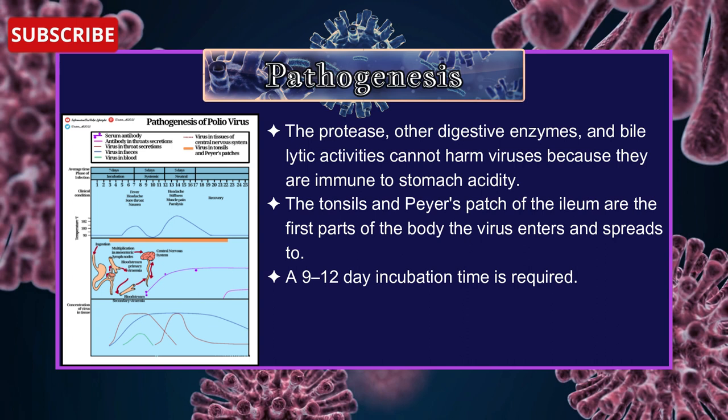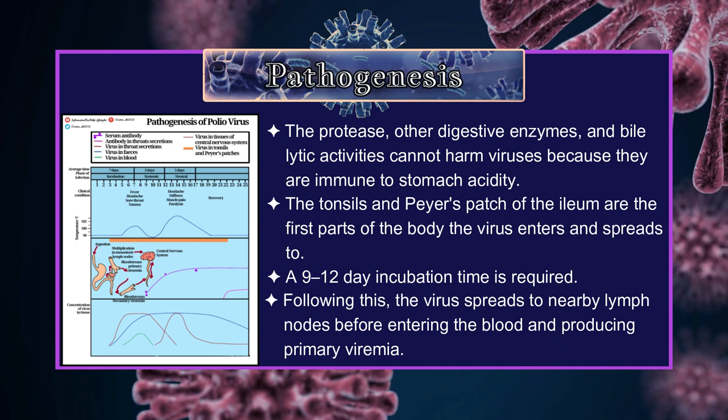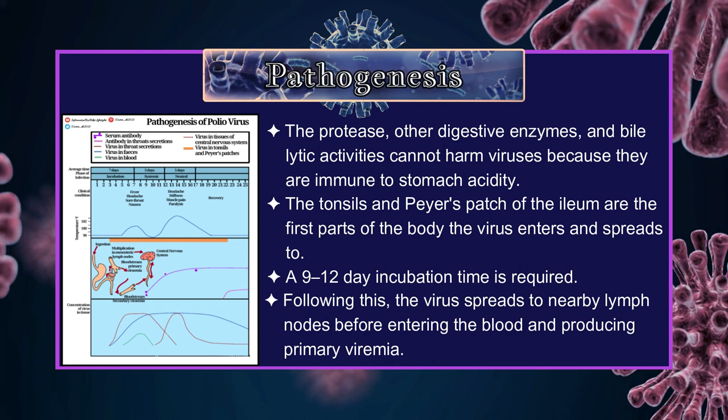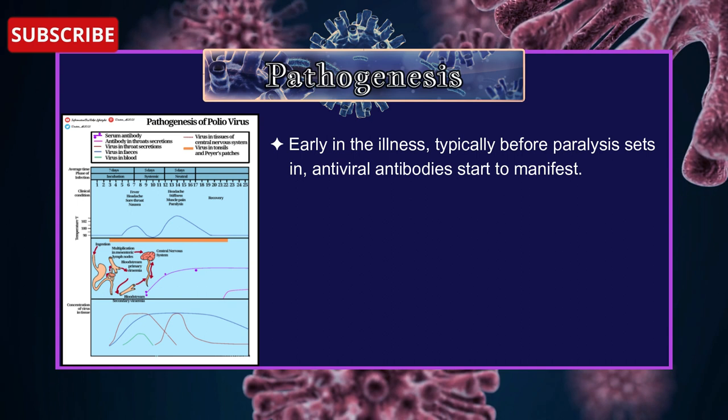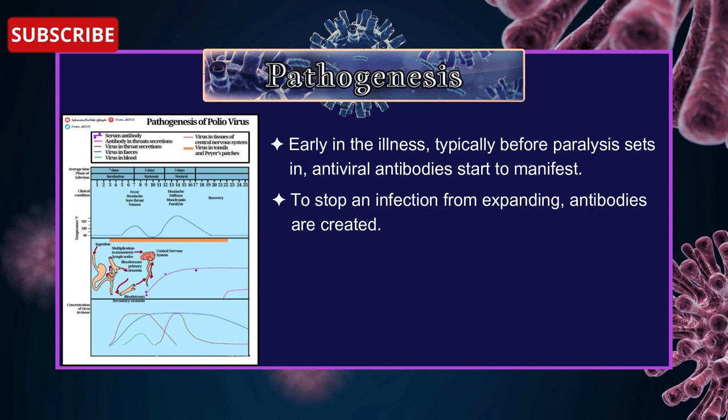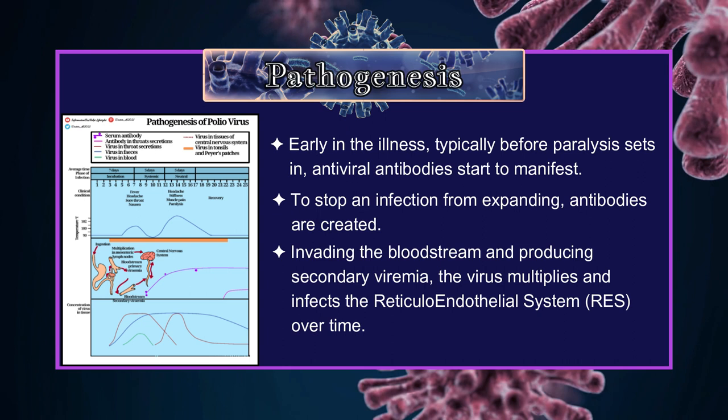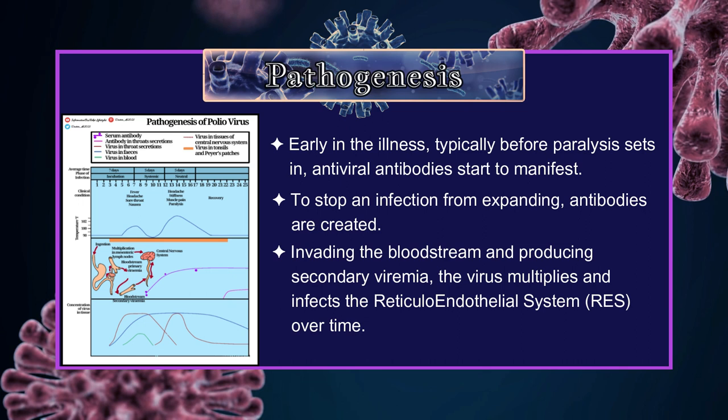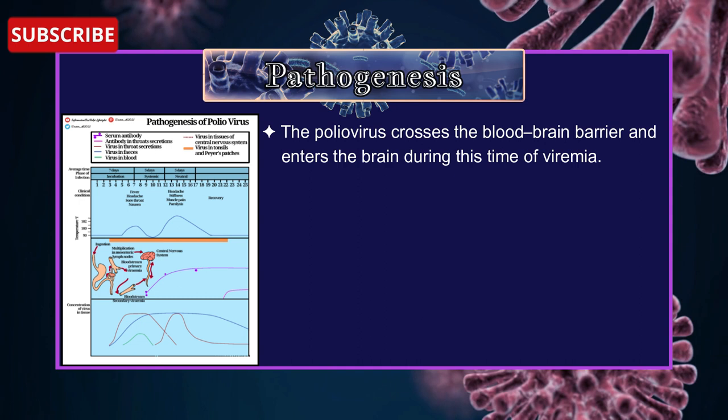A 9-12 day incubation period is required. Following this, the virus spreads to the nearby lymph nodes before entering the blood and producing primary viremia. Early in the illness, typically before paralysis sets in, antiviral antibodies start to manifest and are created to stop the infection from expanding. The virus then invades the bloodstream and produces secondary viremia, multiplying and infecting the reticular endothelial system over time. The poliovirus crosses the blood-brain barrier and enters the brain during this period of viremia.